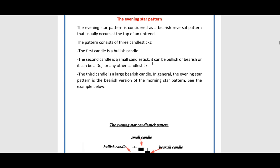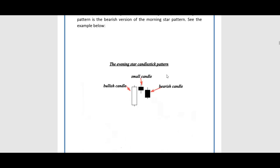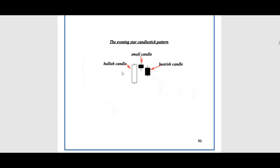The second candle can be bullish, bearish, or a doji, or any other candlestick. The third candle is a large bearish candle. In general, the evening star pattern is the bearish version of the morning star pattern. The illustration below shows a bullish candle, then a small bearish candle, and then another bearish candle.